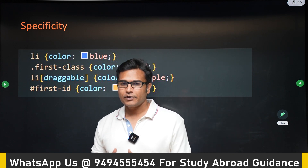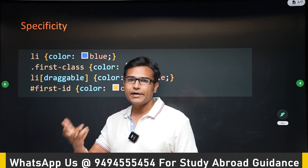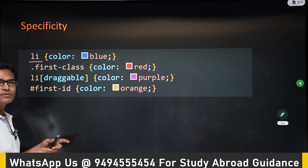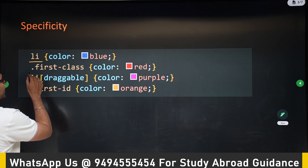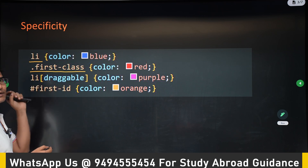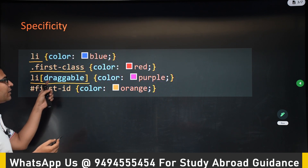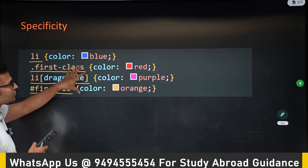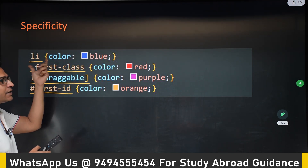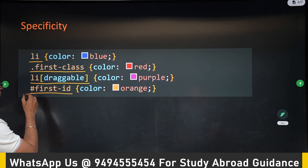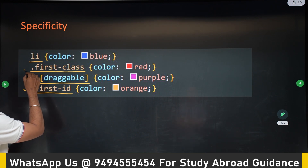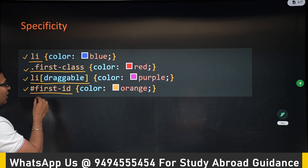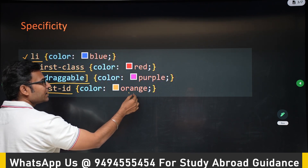The next rule is specificity — how specific you are in selecting a selector. For an element like li, you can select it using its element selector, or by class, or by attribute, or by id. If all four rules are applied, which color will the element get? The highest priority is given to the id selector, next is the attribute selector, next is the class selector, and the element selector gets the least priority. So if all four are applied, the id selector wins.